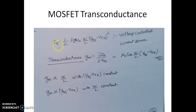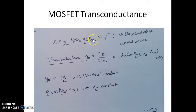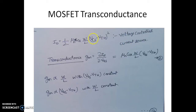Since ID is given by an expression showing that the current depends on the gate-to-source voltage, this is called a voltage controlled current source. The drain current ID is controlled by the gate-to-source voltage VGS, which is why the MOSFET is referred to as a voltage controlled current source.